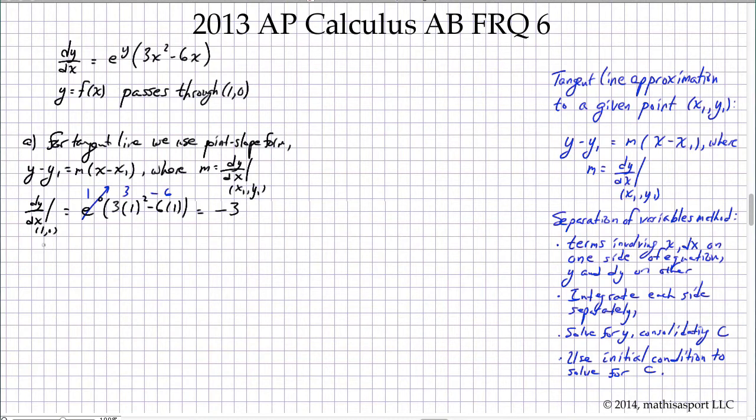e^0 is 1, this is 3 minus 6, so we get -3. And so the tangent line is y - 0, I'm not even going to write that in, I'm just going to say y = -3(x - 1).